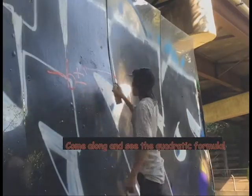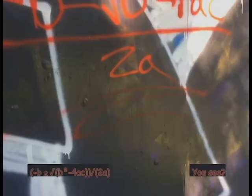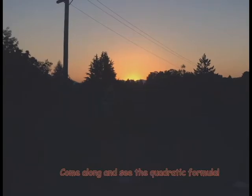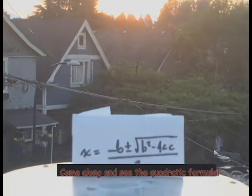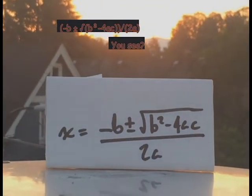Come along and see the quadratic formula. Come along and see the quadratic formula. Minus B, plus or minus root B, square minus 4AC over 2A. Come along and see the quadratic formula. Minus B, plus or minus root B, square minus 4AC over 2A.